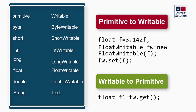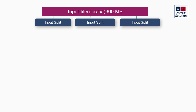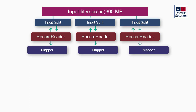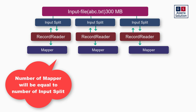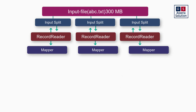These are the two prerequisites you need to understand before going into the full flow. The input file data is broken into input splits; data is read in text input format by the record reader from your input split and given to the mapper. There will be as many mappers as there are input splits, but the number of times a mapper works equals the number of records in your input split.